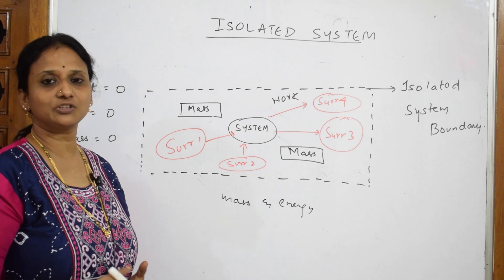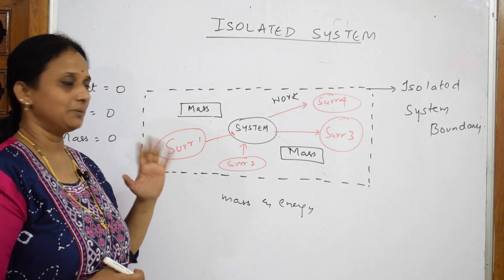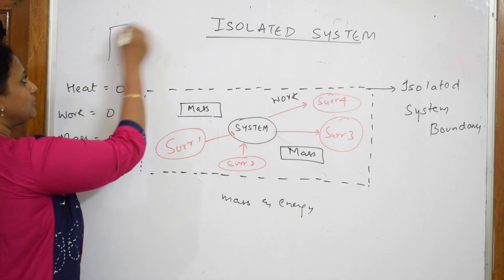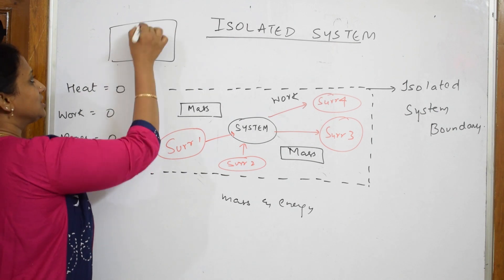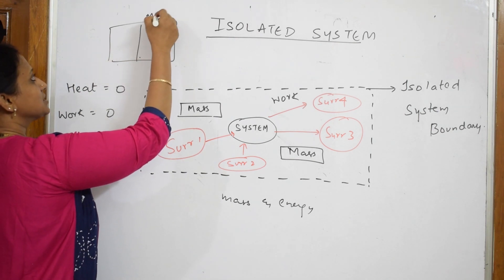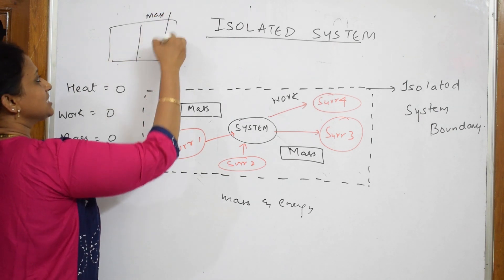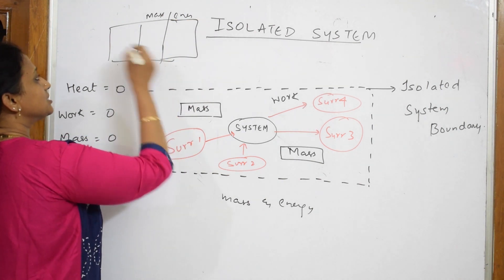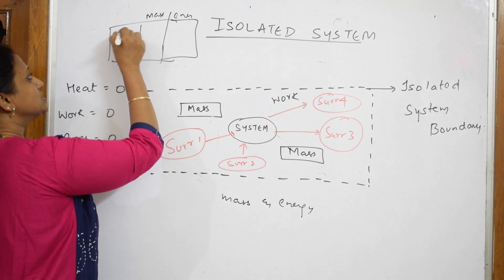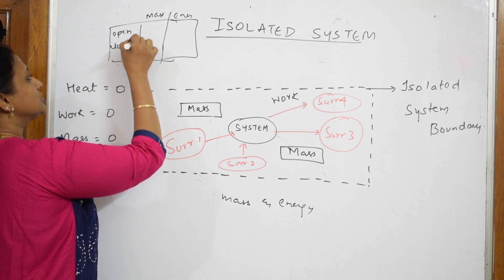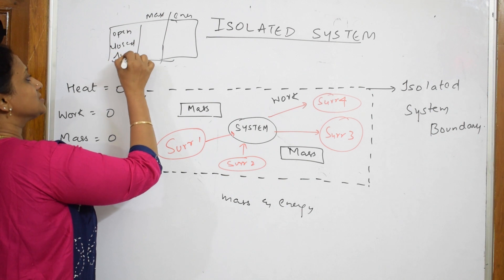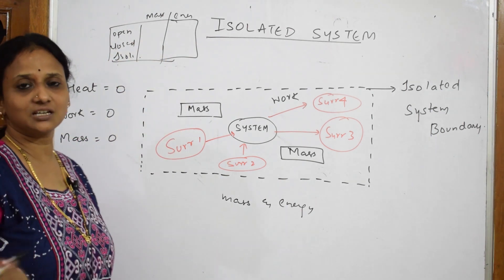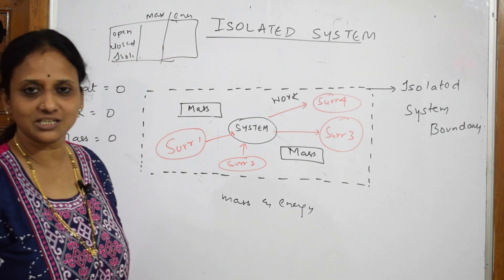Now, gradually we'll go into more thermodynamics topics. To review, try making a table with columns for mass and energy, and rows for open system, closed system, and isolated system — then tick wherever there is mass exchange and wherever there is energy exchange.